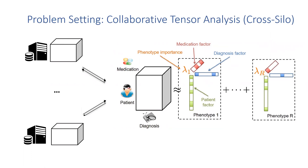As a quick background, tensor analysis and tensor factorization are unsupervised learning methods for discovering latent patterns from multi-dimensional data. They have shown great success in many applications, such as recommender systems and spatial temporal data analysis.